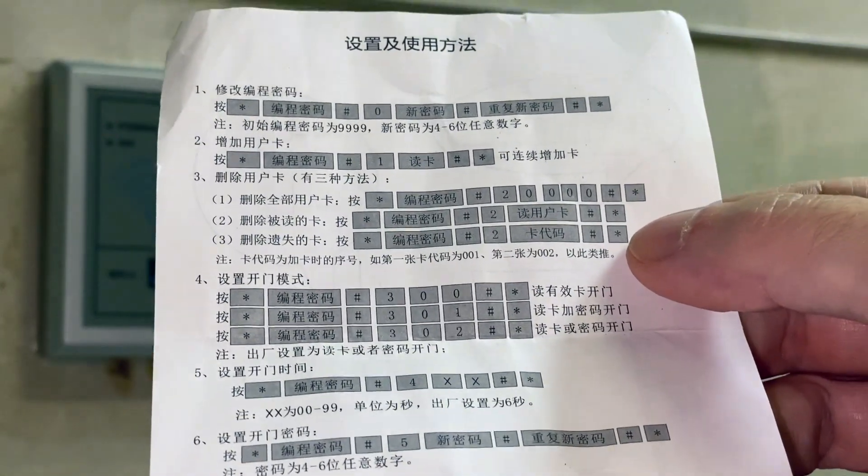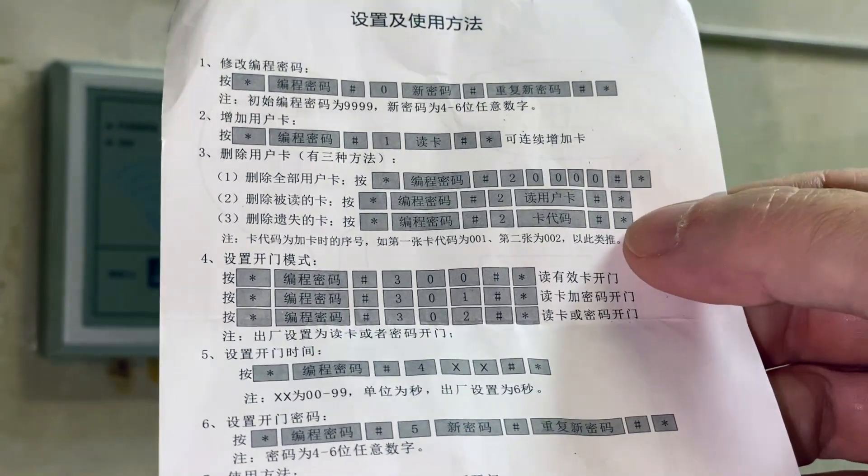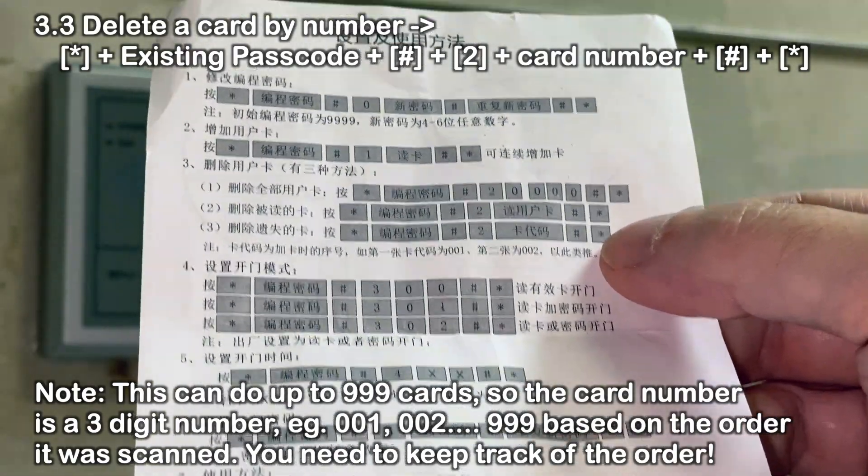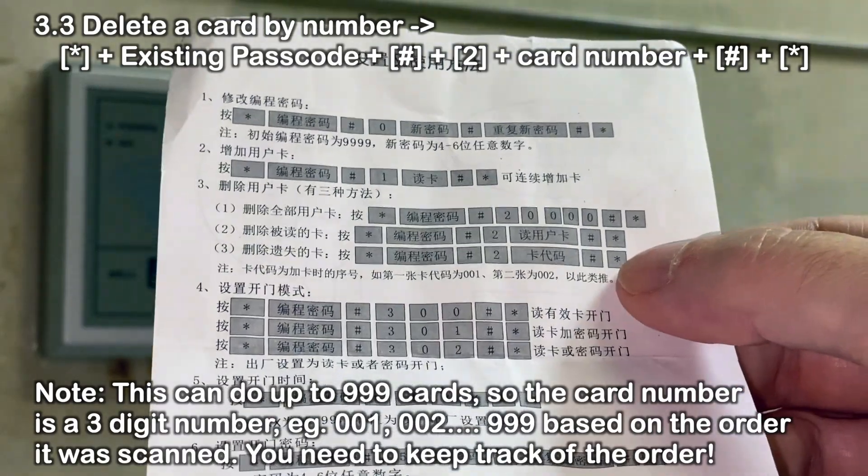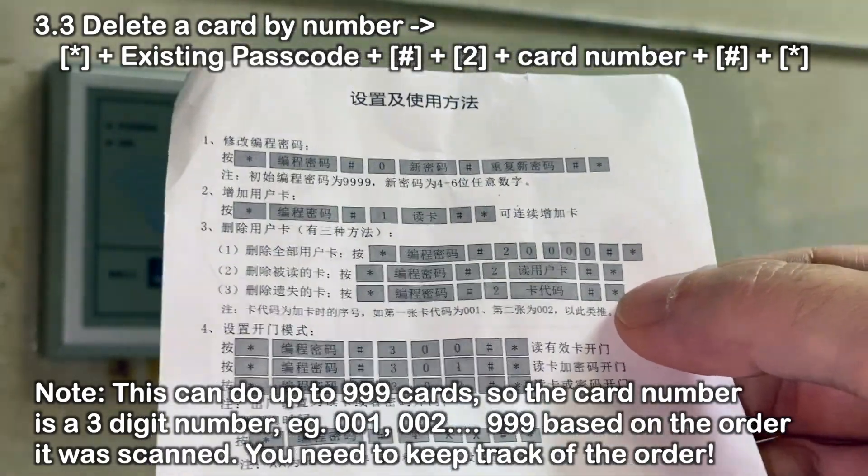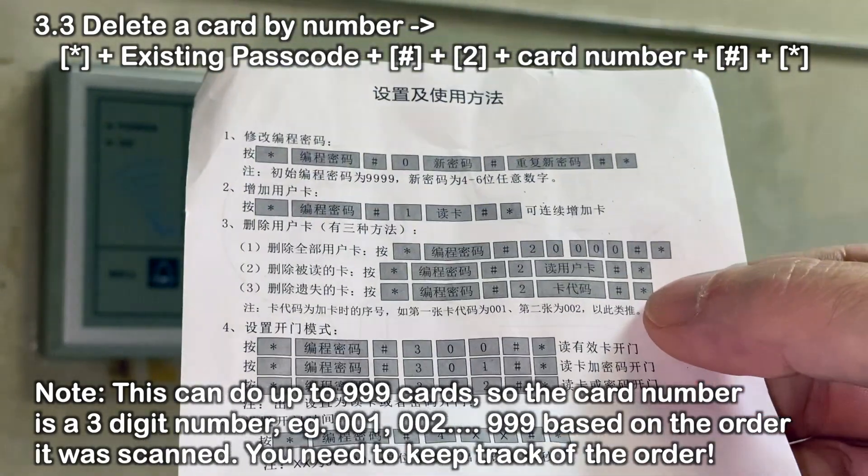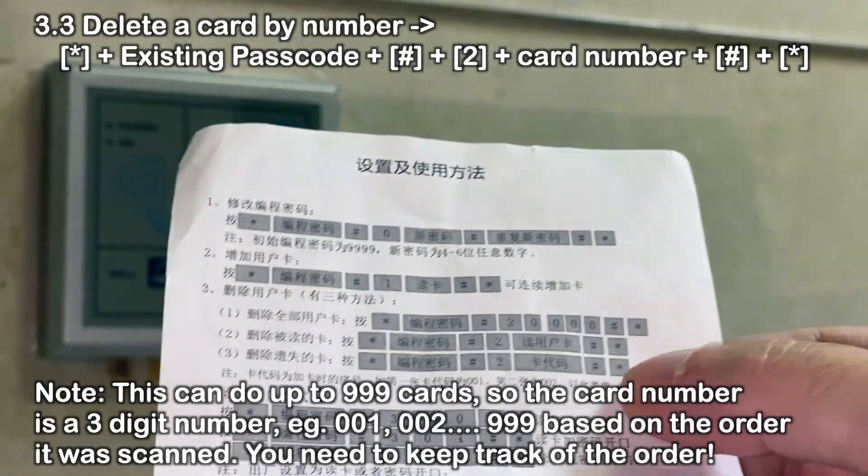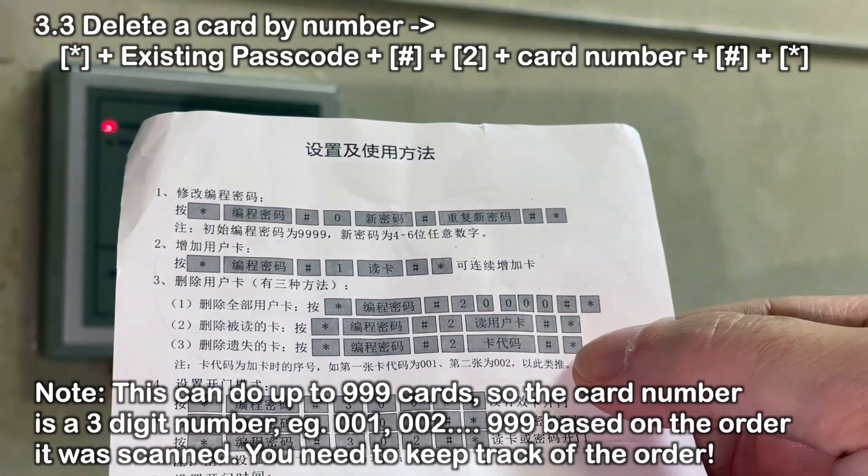The third one is to actually remove it by number. So as you program it with the cards, it keeps track of the number, like this is the second one we've added, the third one we've added, fourth one. So if you write that down or mark the card so you know which one is which, even if the guy lost it, you could basically say okay, the 56th card is the one that we have to remove.